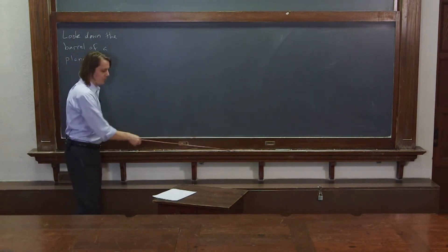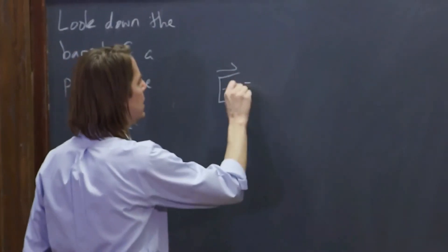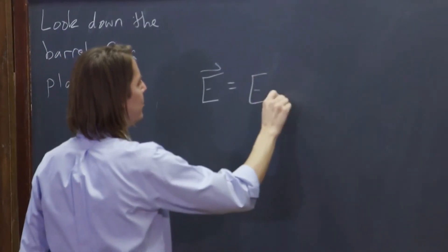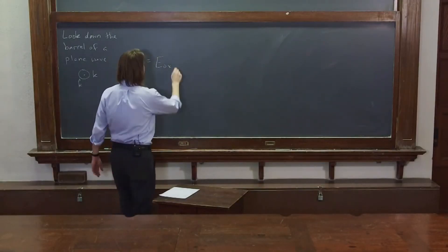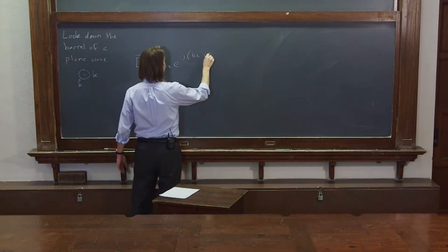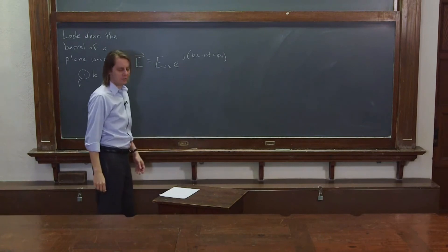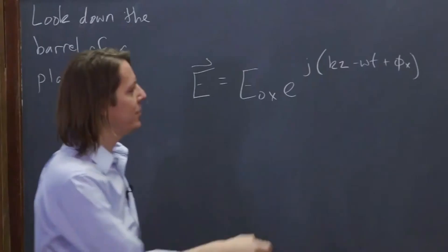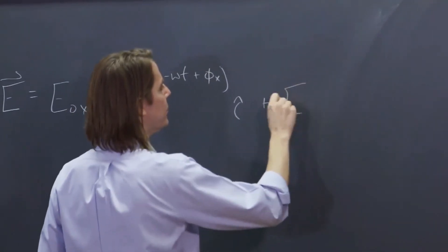So how would we describe that? Well, we would just say E, the electromagnetic field, has got some amplitude in the x, E-not-x, e to the j(kz minus omega t), plus we'll give it a phase in the x. And in the past, we've been leaving these phases off, but now we need them because we have two waves.